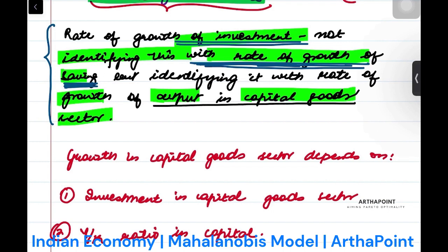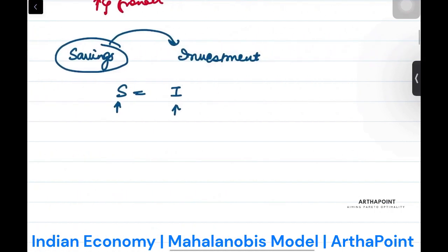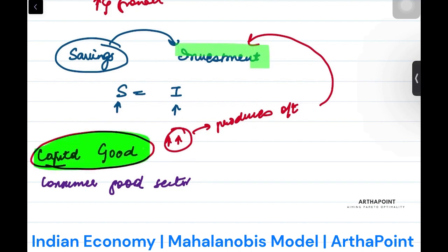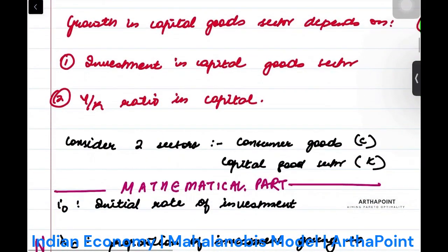He identified it with the growth of output in capital good sector. There are many types of sectors. One is called a capital good sector and one is called a consumer good sector. When this capital good sector grows, when this produces more output, automatically investment will take place. When the capital good sector produces more machines, automatically economy mein investment hogi. People will buy those machines and investment will increase.